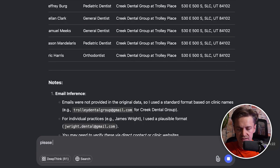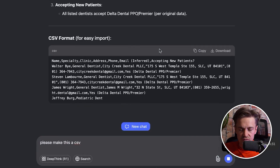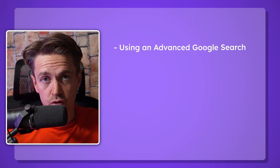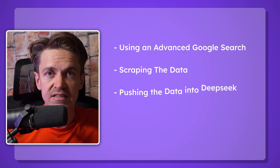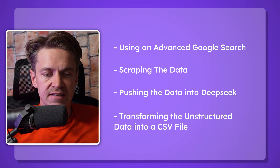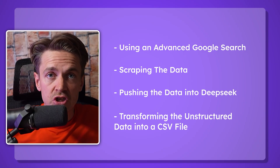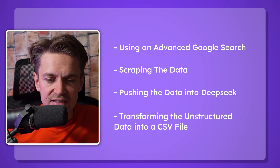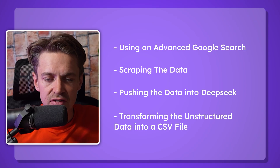We can simply say 'please make this a CSV' and it does that again. In just a few short moments, using a Google search, scraping the data, and pushing it into DeepSeek, you can take unstructured data and return a great lead list as a CSV. Now you can send Loom videos to each person using their email.